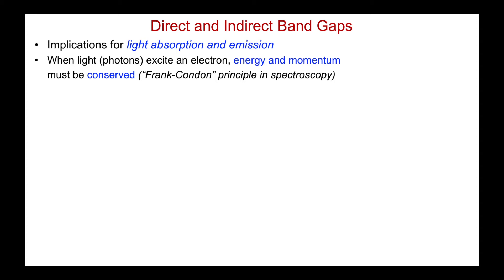So the difference between a direct and indirect band gap is very important. And as I mentioned a few seconds ago, it has huge implications for light absorption and emission. When light, photons, excite an electron, two things must be conserved. Energy, obviously the energy to promote the electron to a higher energy level is coming from the energy of the photon. So that must be conserved. But also momentum must be conserved. And that's the so-called Frank Condon principle that you may see in physical chemistry and spectroscopy. So I've got to conserve both.